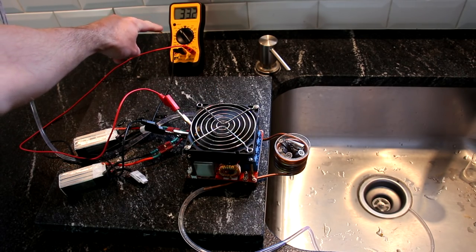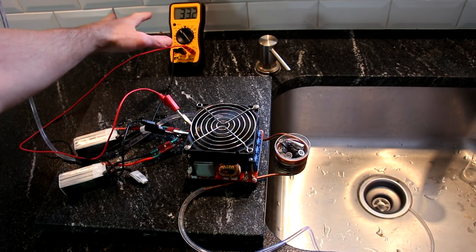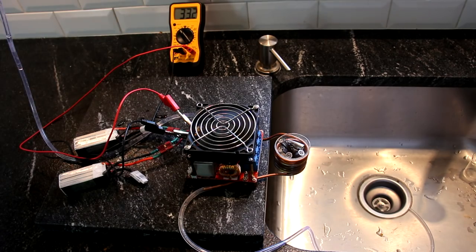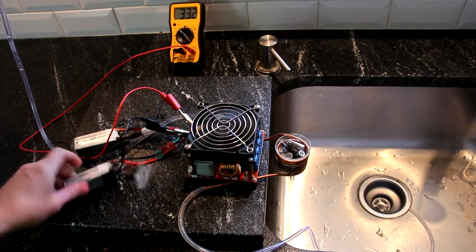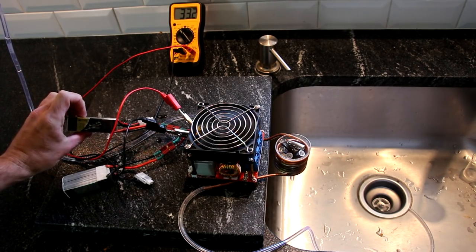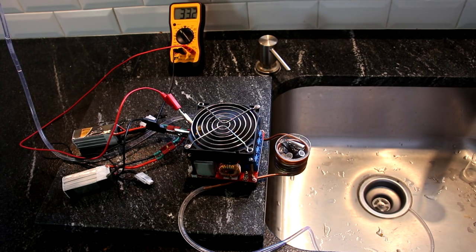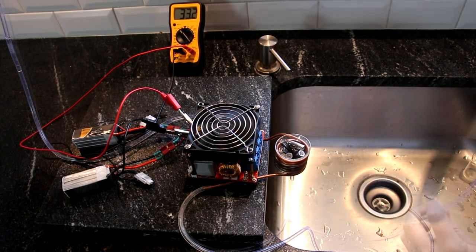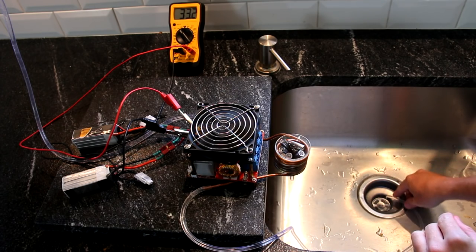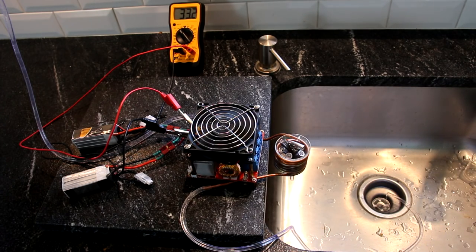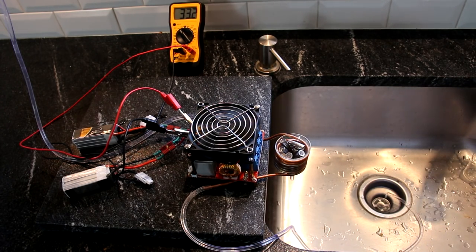Back here we have a voltmeter showing that we have more or less a full charge on the batteries. And here we go with the power source, the two Tattoo 1050 lipos. So let's start the siphon and see how it goes. Looks like we have water flow. So let's start the experiment.